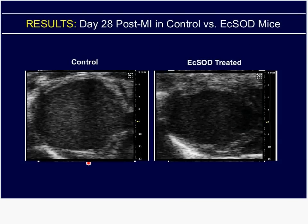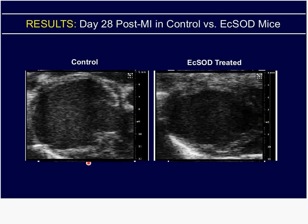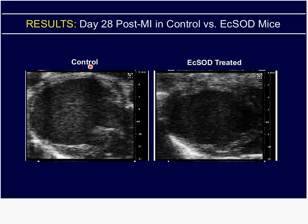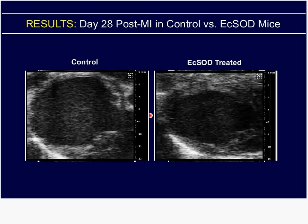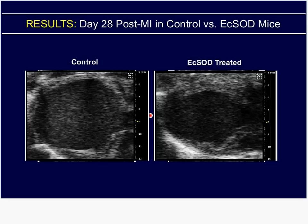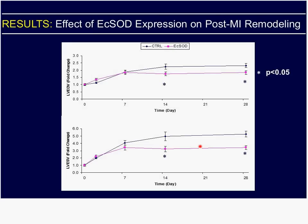Let's compare a few controls and ECSOD treated. This is at the end of the study, day 28. You'll notice substantial LV remodeling — the heart has assumed a round geometry as opposed to an oval — and that's quite a bit improved with the ECSOD treatment. Using the disc summation method, we can very accurately determine the LV volumes both at end-diastole and end-systole. There is not a lot of difference between groups up to day seven, and that difference only becomes apparent at day 14 and is maintained until day 28, both in end-diastolic volume and end-systolic volume.